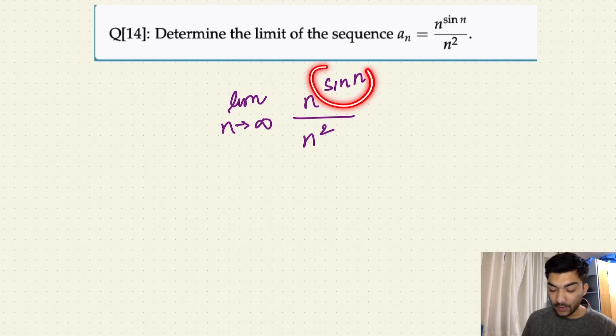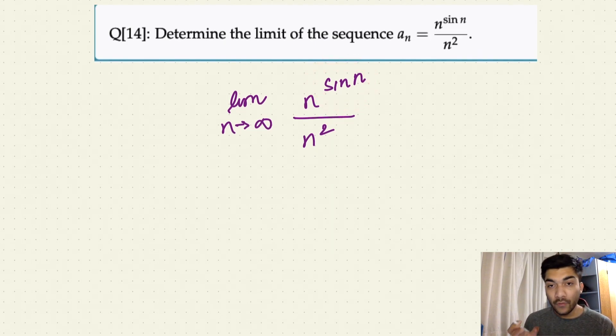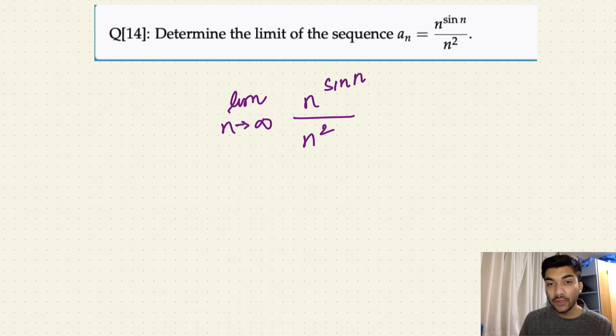But since we have a sine function here, we know a very important property: the range of a sine function is always between minus one and one.